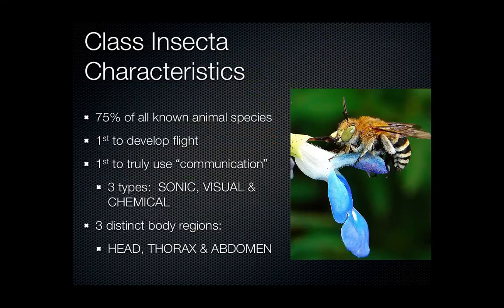A few things that make an insect an insect, or the characteristics that would classify them — this isn't really a classification characteristic, but most animals are insects. Three out of four animals is an insect, and really most of those are beetles. This is the majority of the animal kingdom in terms of number.